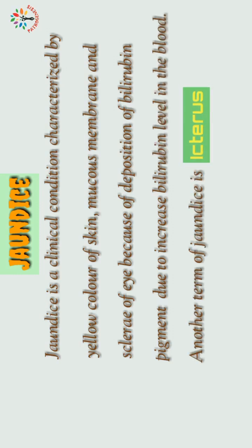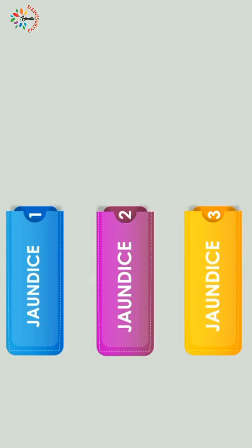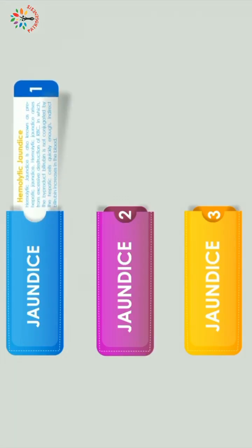There are three types of jaundice. First, hemolytic jaundice, also known as pre-hepatic jaundice. Hemolytic jaundice arises from excessive destruction of RBCs, in which the by-product bilirubin is not conjugated by the hepatic cells quickly enough. As a result, indirect bilirubin increases in the blood.